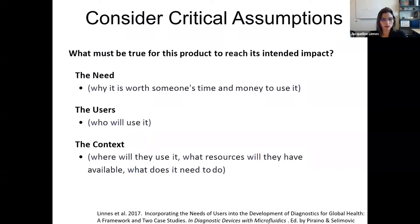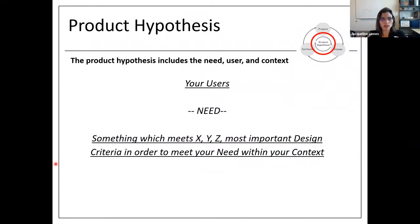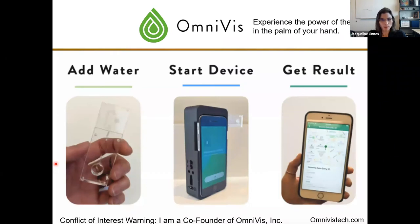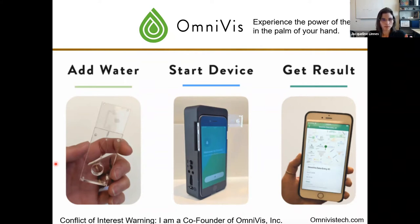You consider context: where will it be used, what resources are available, and what does the device need to do? You put these together into that hypothesis. I'll give an example of a technology I've been working on, now as a small company — OmniViz. I'm one of the co-founders, so take everything with a grain of salt. The important part here is the usability of the device. The idea is that you can add water, start the device, get the results, and the disposable piece — that little chip on the side of the screen — is the only part that would be a cost over time.